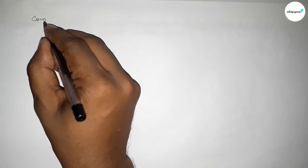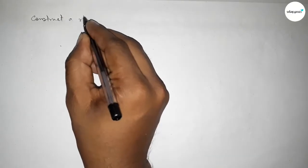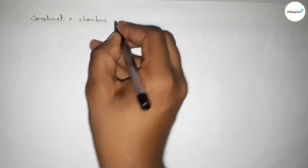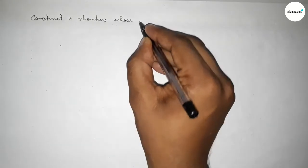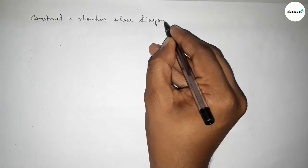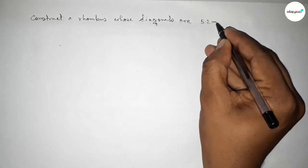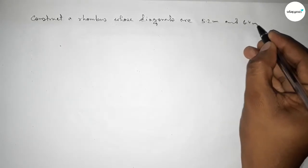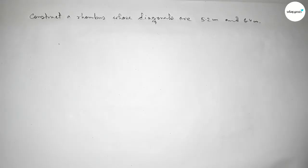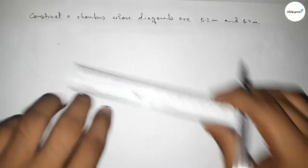Hi everyone, welcome to SI Share Classes. Today in this video we have to construct a rhombus with two given diagonals, 5.2 centimeters and 6.4 centimeters. So let's start the video.